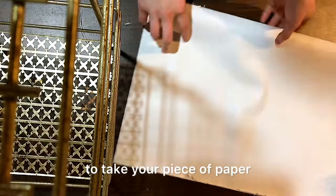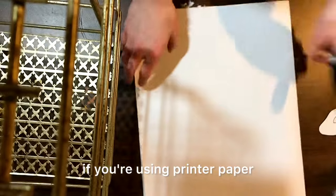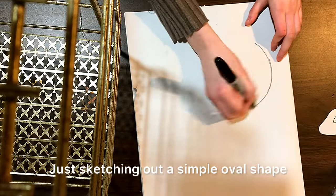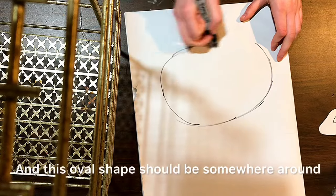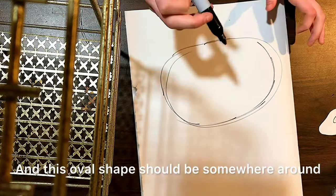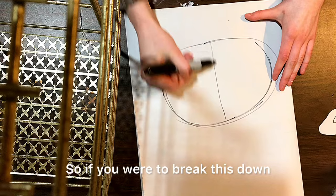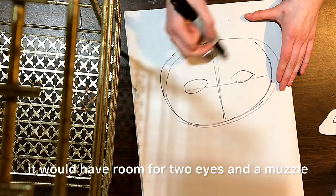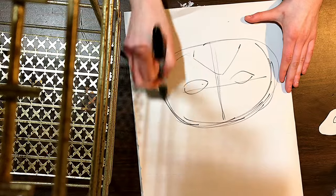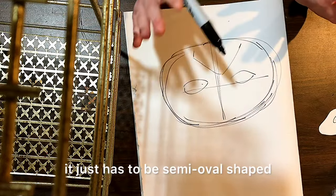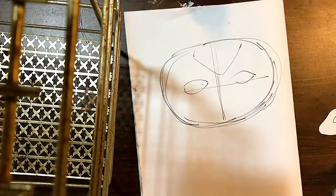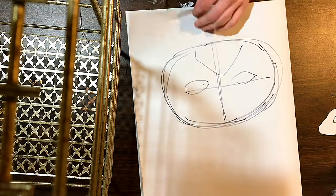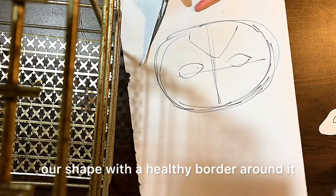I'm going to take your piece of paper. If you're using printer paper, put it horizontally in front of you. Just sketching out a simple oval shape. This oval shape should be somewhere around as big as your face. So if you were to break this down, it would have room for two eyes and a muzzle. It doesn't have to be perfect. It just has to be semi-oval shaped. Then from there, we are going to cut out our shape with a healthy border around it.